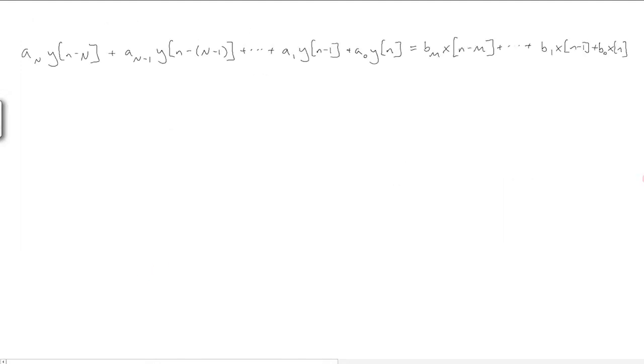Taking the Z-transform of both sides, we get this. Then we can write the transfer function of this system, H of Z, which equals Y of Z over X of Z, as the ratio of these polynomials.